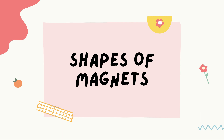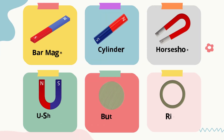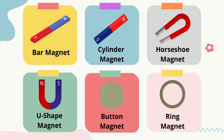The next lesson is the shapes of magnets. There are various types of magnet shapes that you need to know. The first one is the bar magnet — shaped in a bar. The second one is the cylinder magnet.